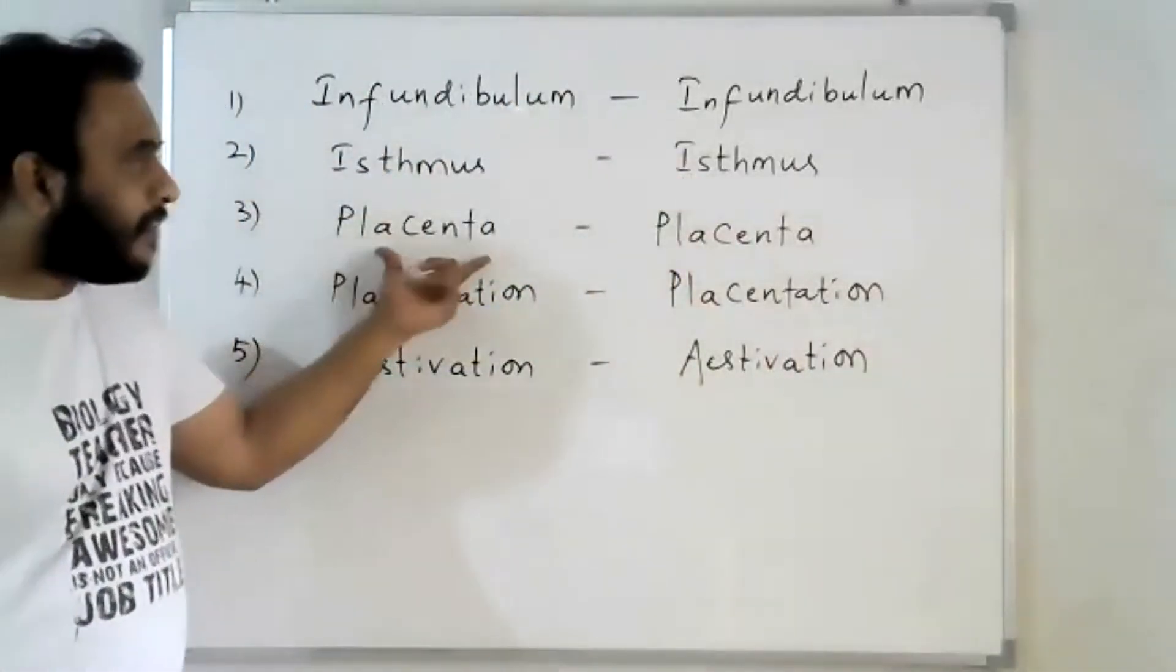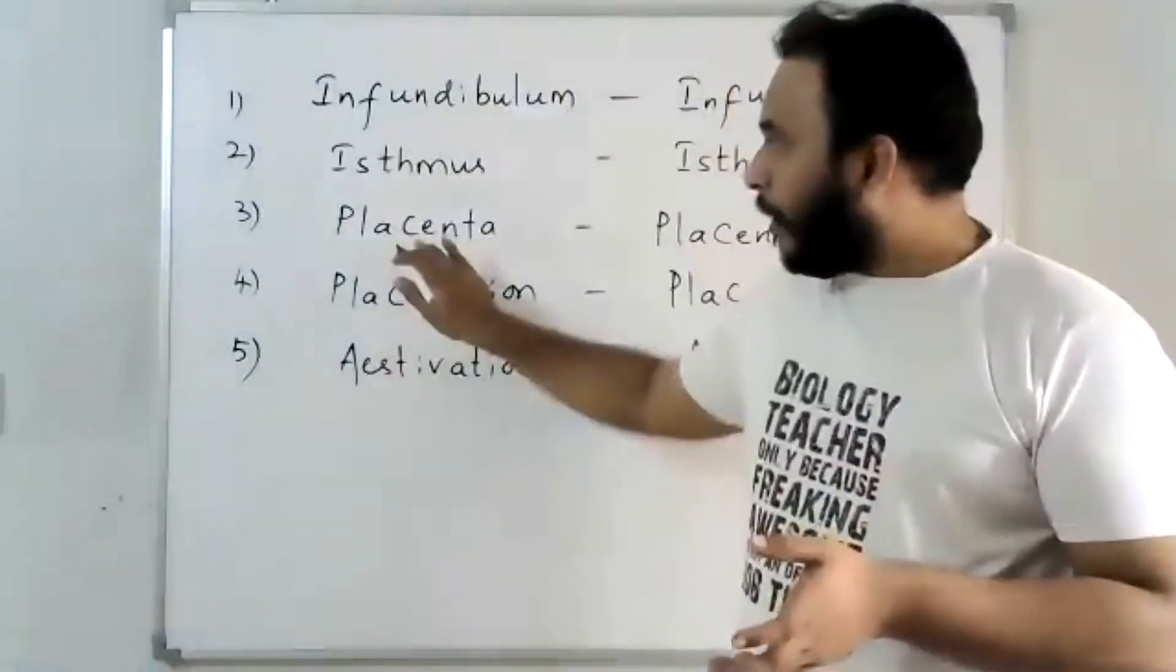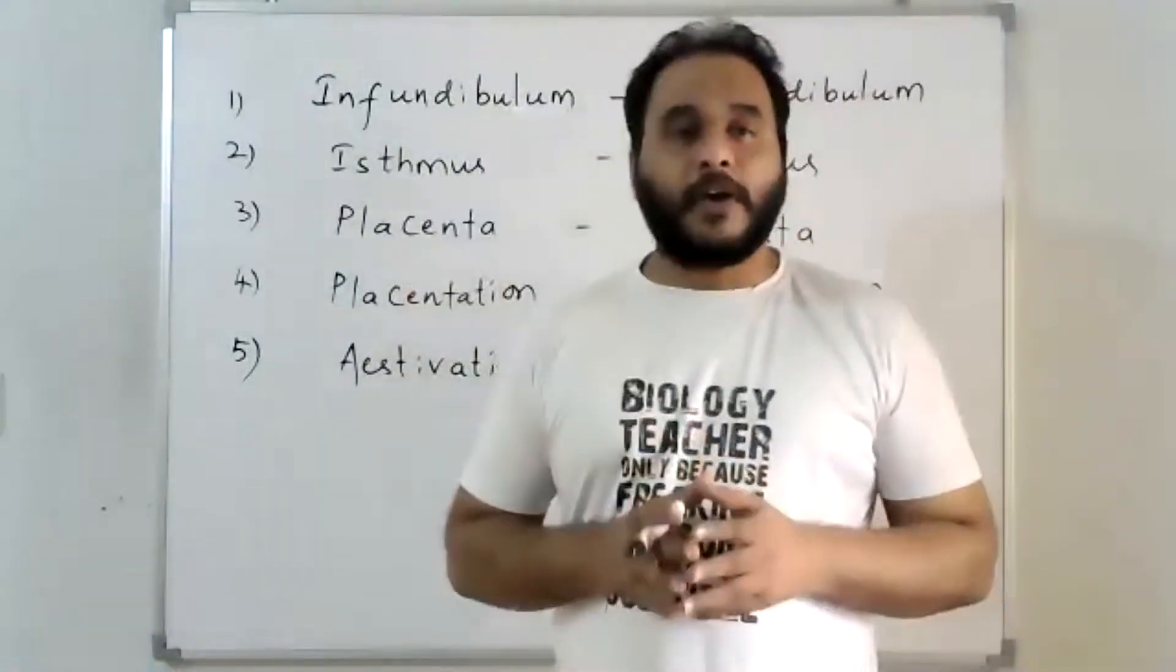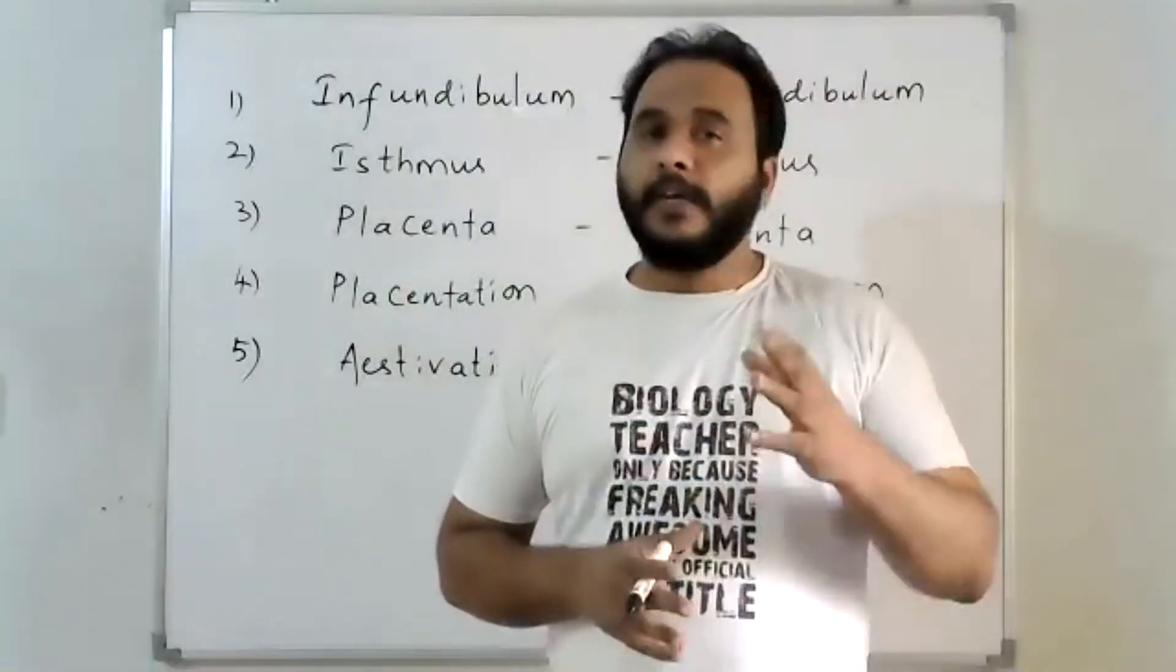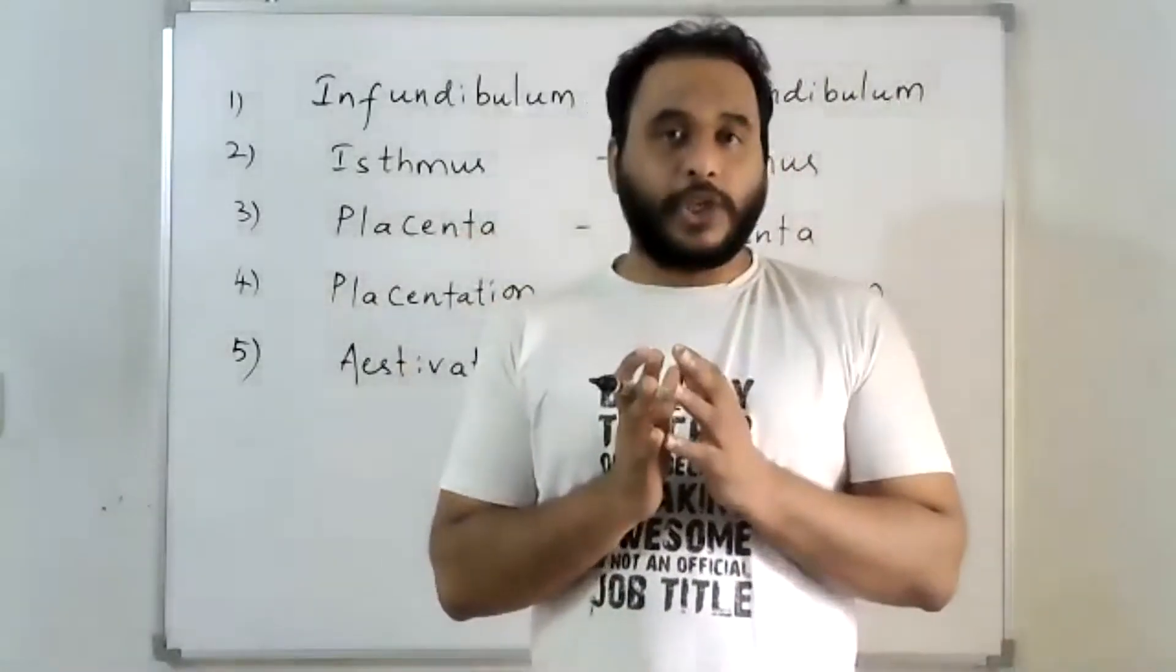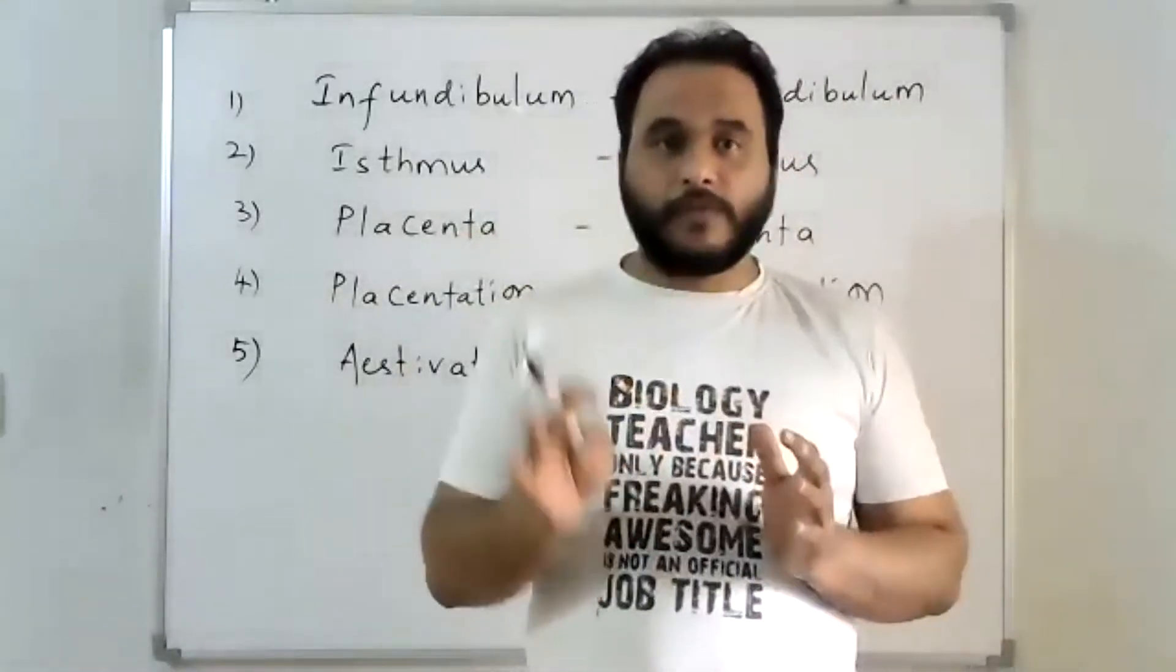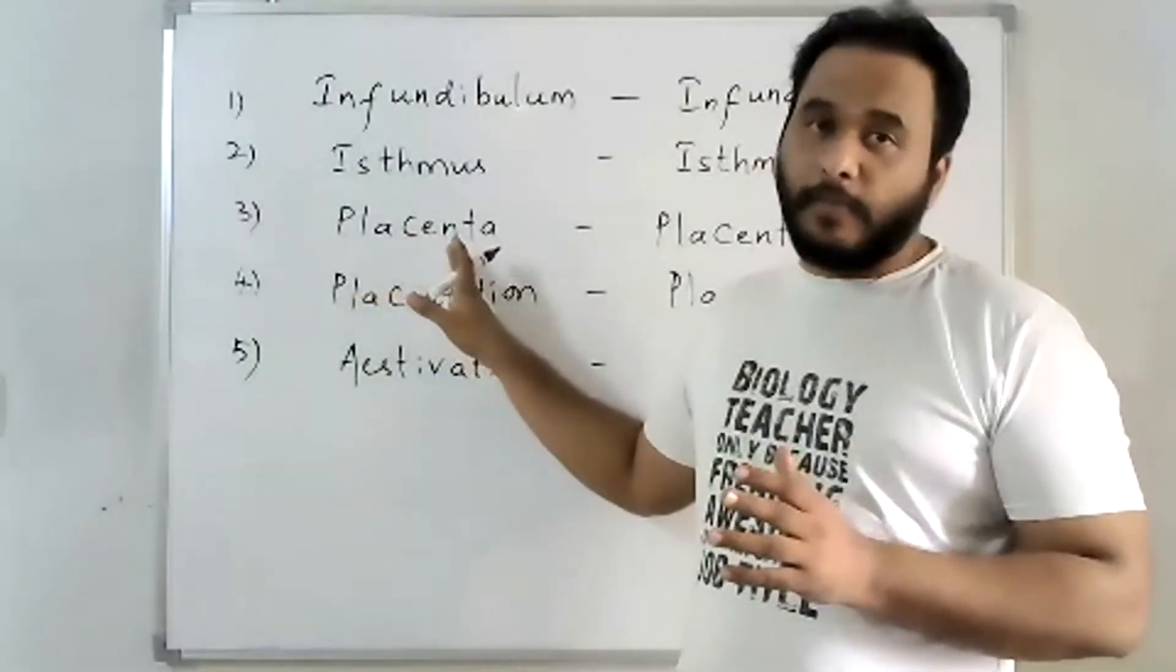Next, coming to third term: placenta. Here also, two meanings. In the morphology of flowering plants and in the embryology of flowering plants, you might have seen this term called placenta. Placenta, which is a soft cushion-like tissue which is present in the center of the ovary to which ovules are attached. That is called placenta.